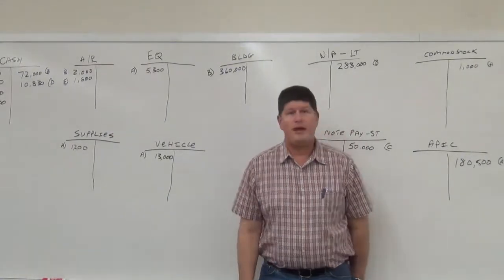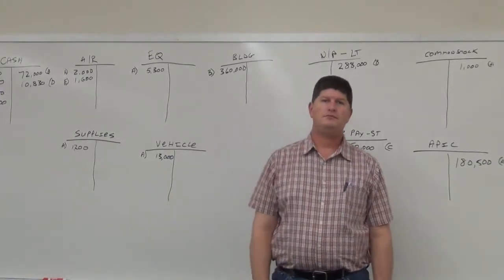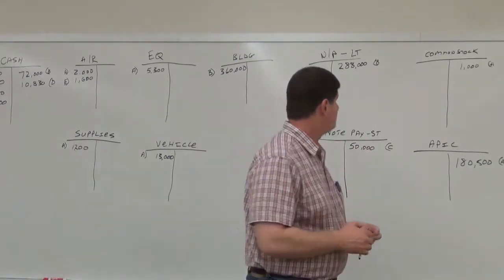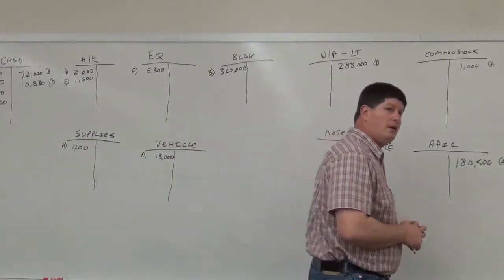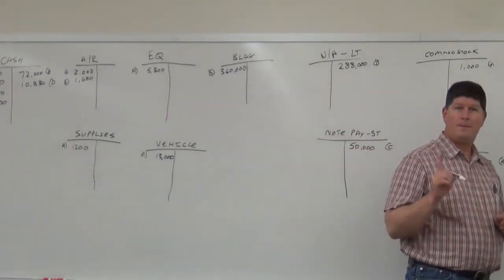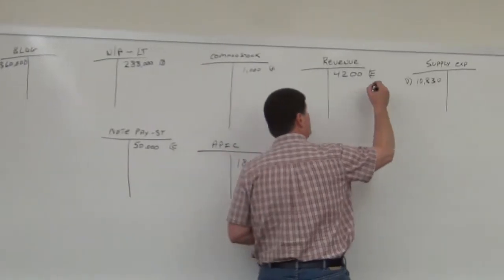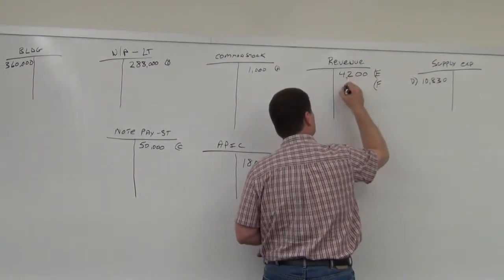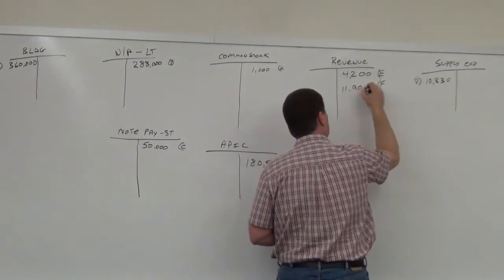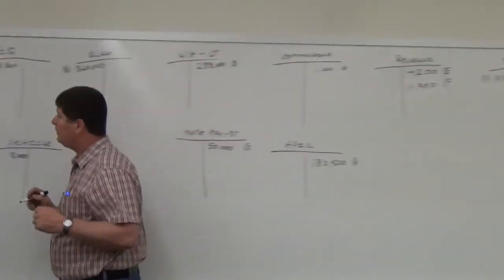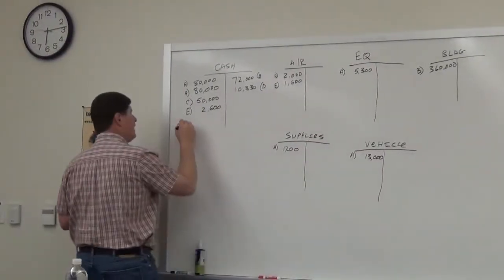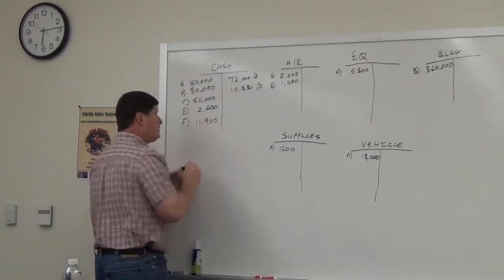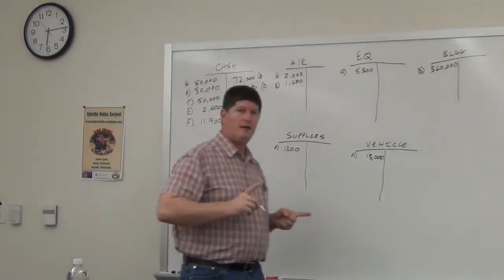Item F: Made and sold food at a retail store for $11,900 cash. That's revenue — cash increases as a debit on the debit side, revenue is a credit. We got all cash, which is good.